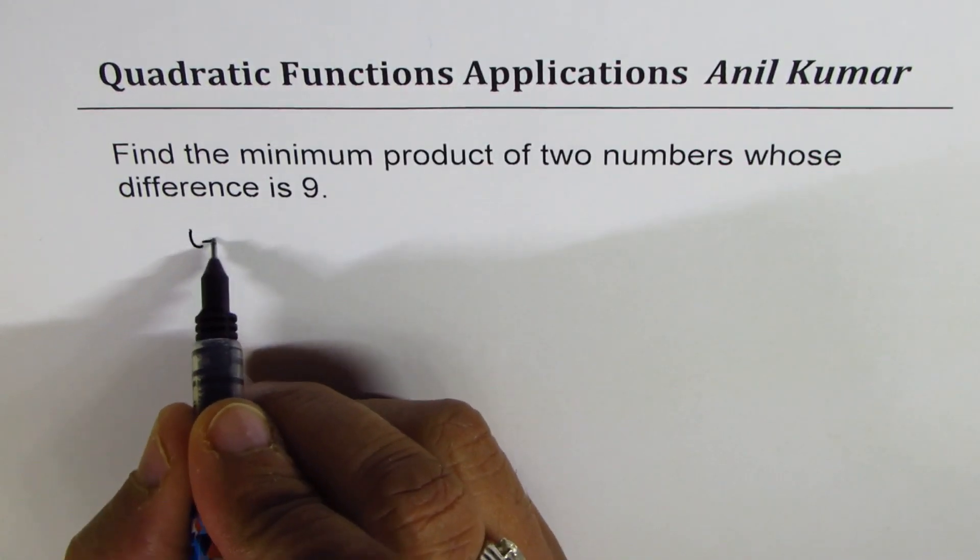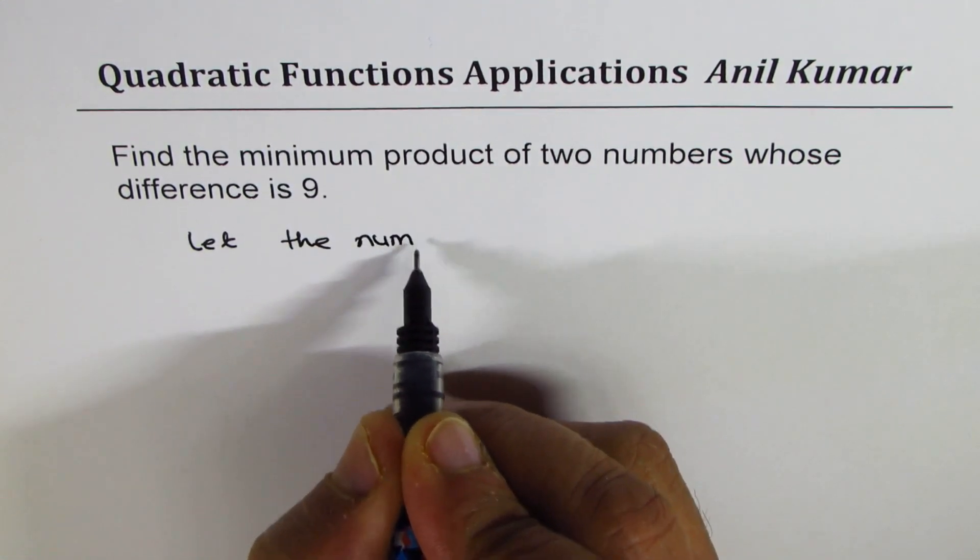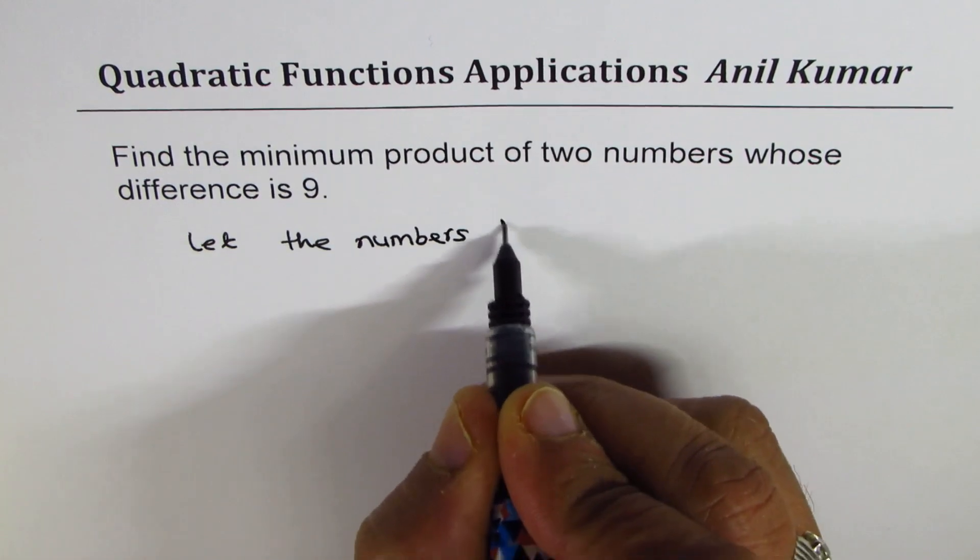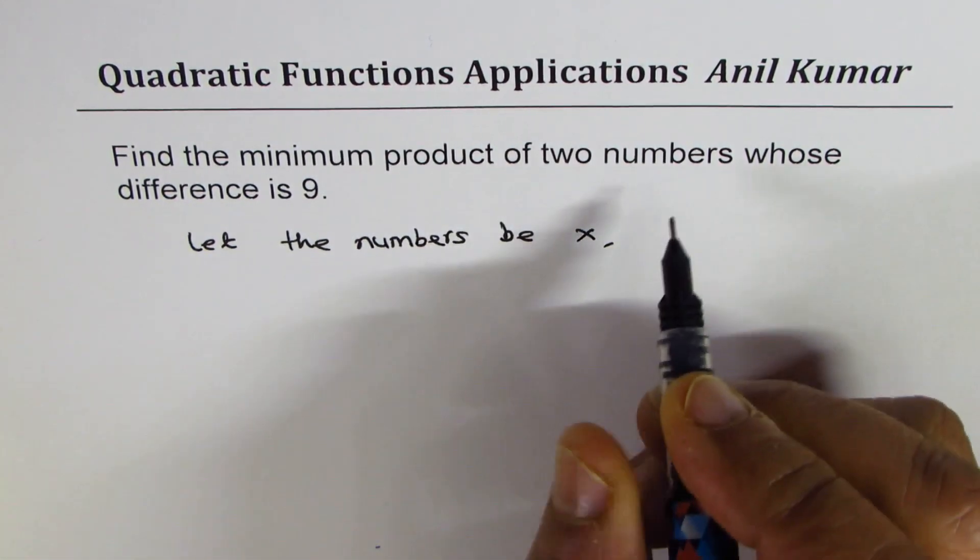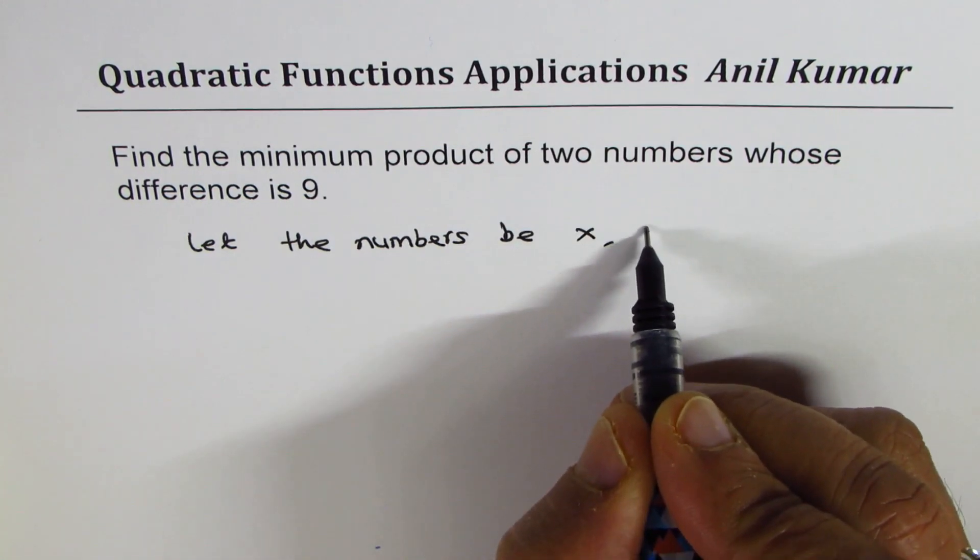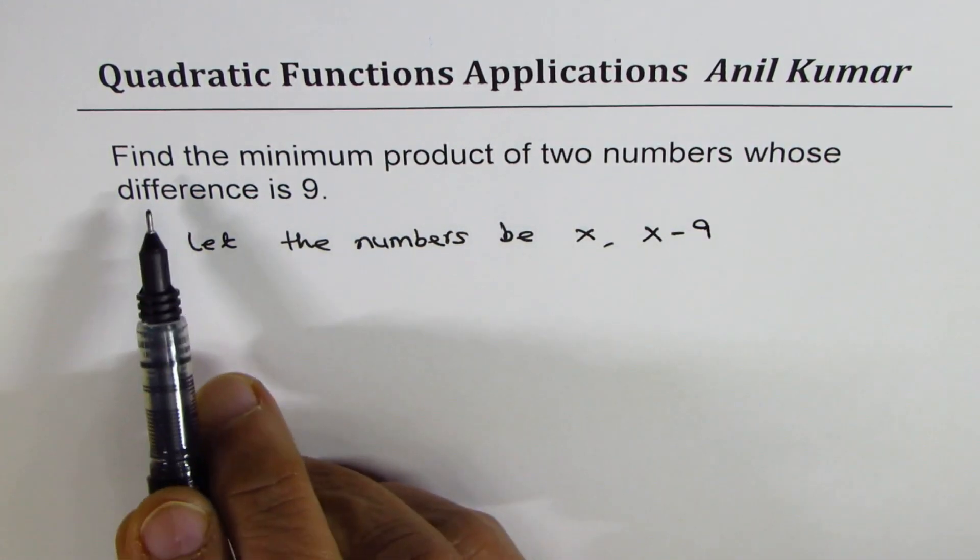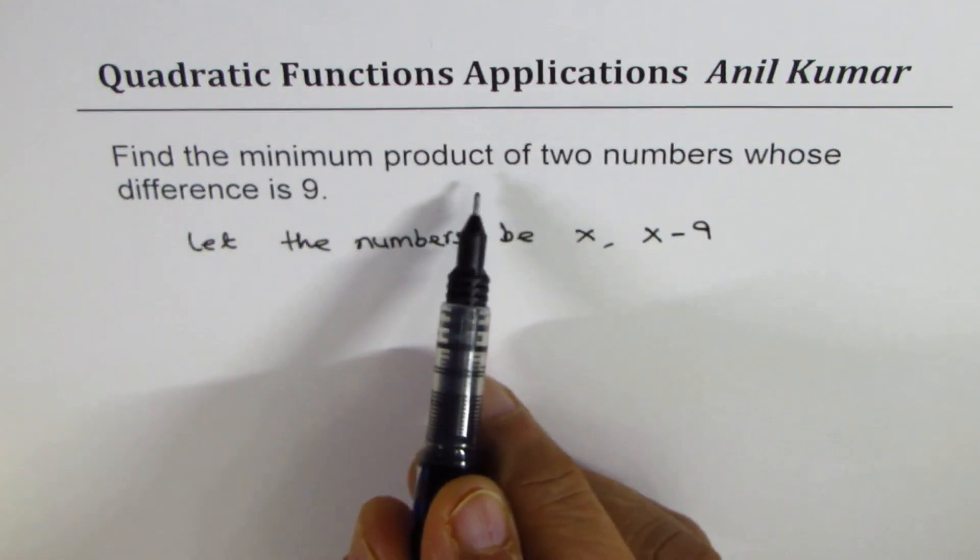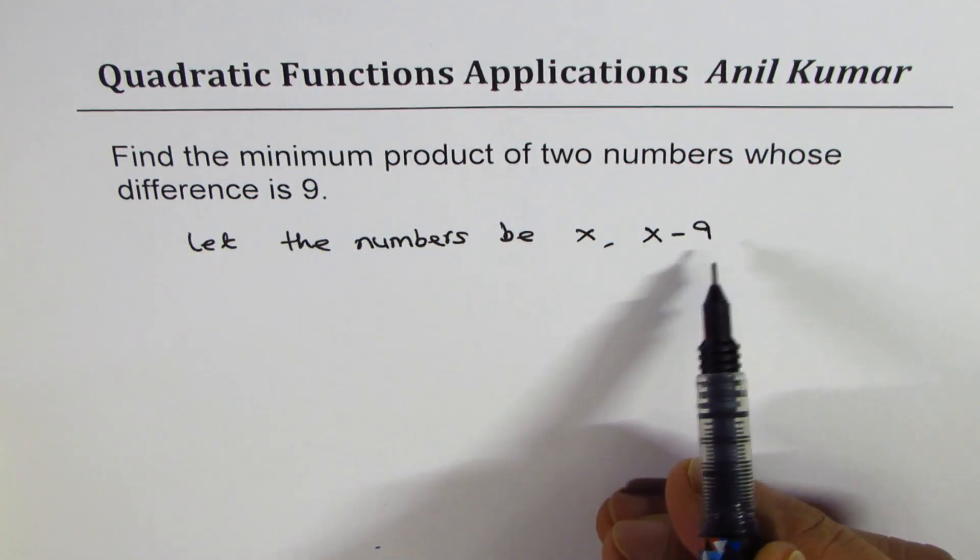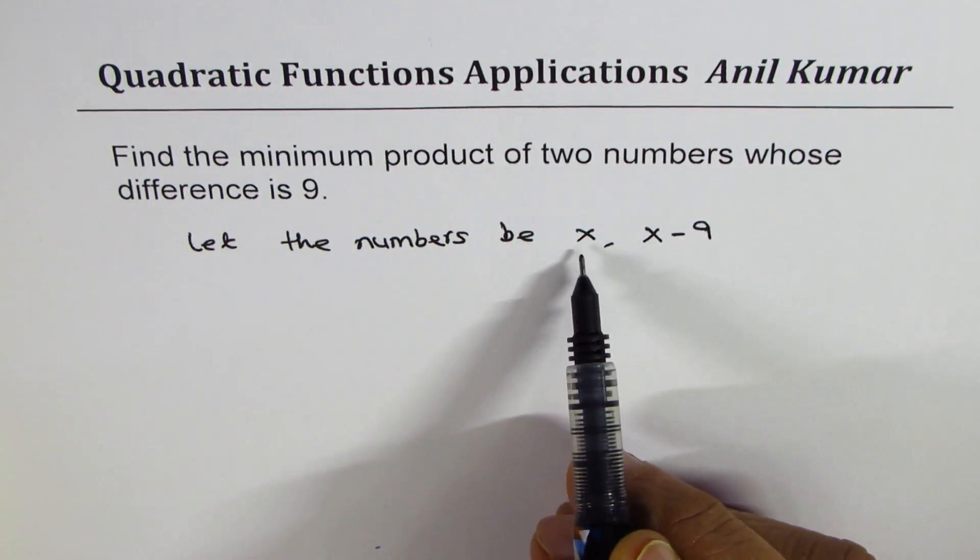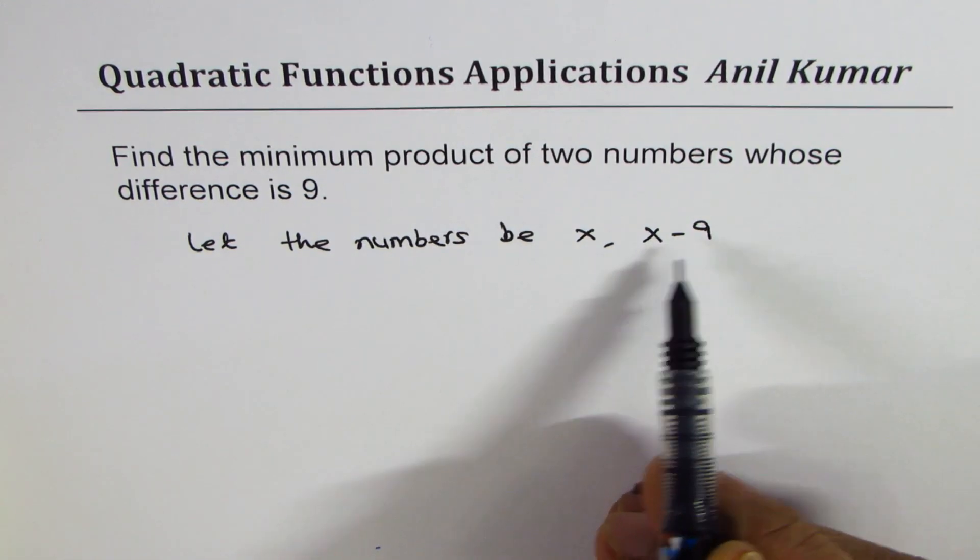So we can say let the numbers be X and X minus 9. It says find the minimum product of two numbers whose difference is 9, so if I take one number as X, let this be the greater number, the other number is X minus 9, then the difference is 9.